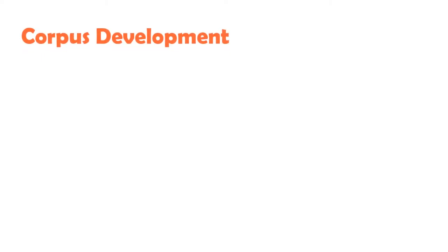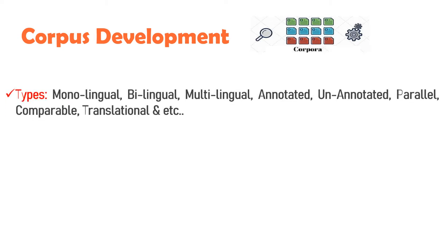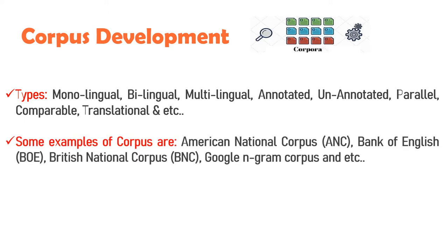Types of corpus: a corpus may contain text in a single language, called monolingual corpus; text in two languages, called bilingual corpus; text in three languages, called multilingual corpus. Annotation corpus assigns POS tags and morphological features to each word. For example, annotation involves deciding whether a word is a noun or verb and if it is inflected for masculine or feminine.